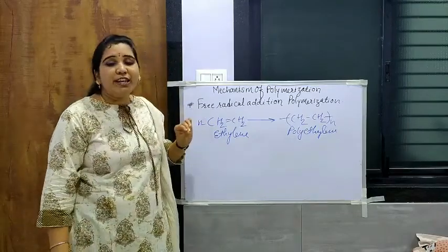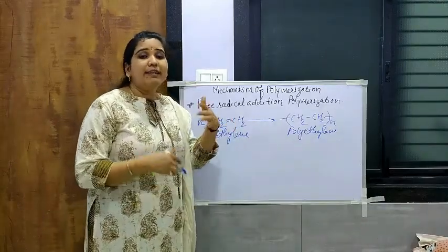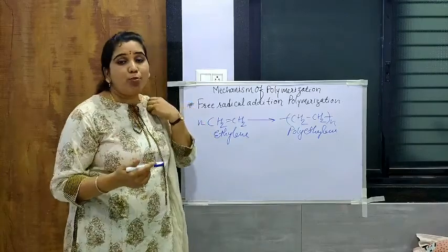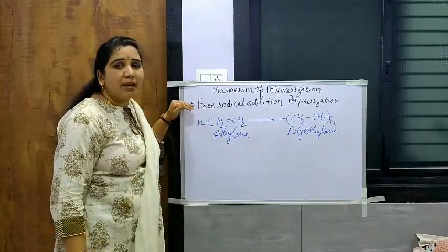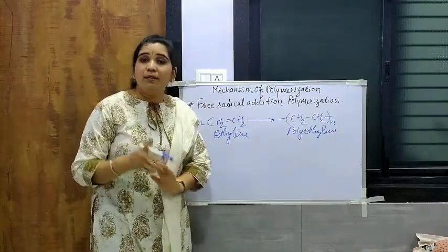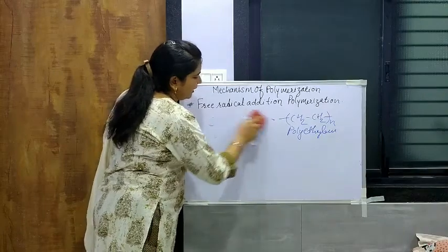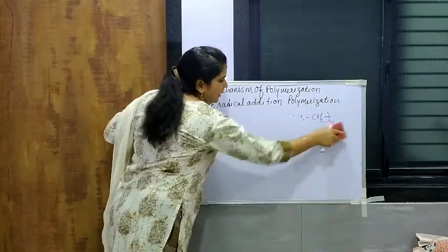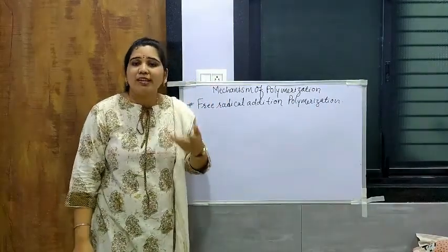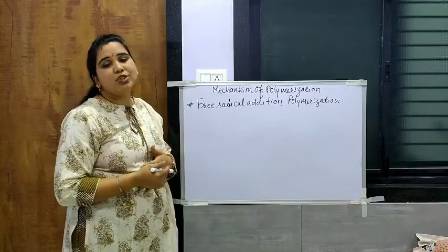This is an example of addition polymerization. Similarly, styrene undergoes polymerization to form polystyrene. We will see particularly the mechanism of free radical addition polymerization. This mechanism can be carried out by three different ways: free radical addition polymerization, cationic addition polymerization, and anionic addition polymerization. We have already seen anionic and cationic addition polymerization in other videos, and now we will see how free radical addition polymerization is carried out.